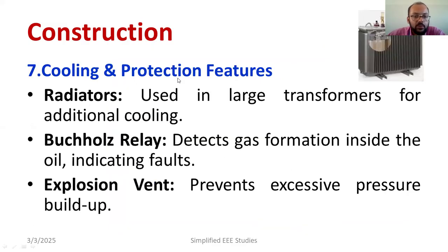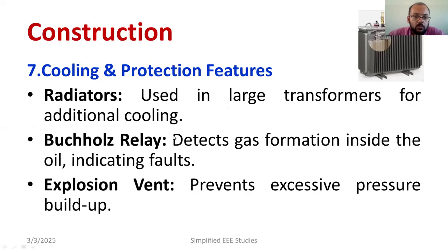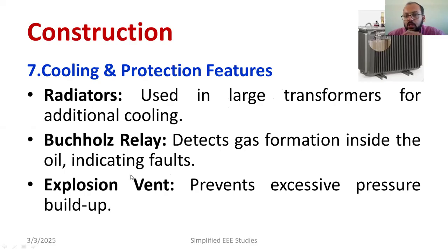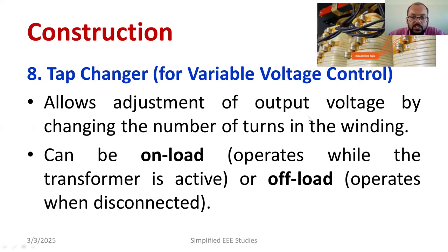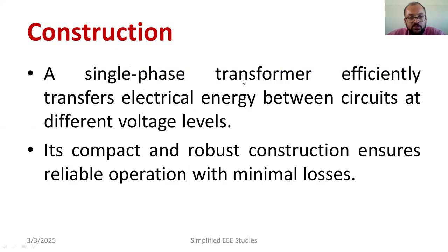Other components include cooling and protection features. We have radiators and fins — a mechanical construction mainly for additional cooling in large transformers. There will also be a Buchholz relay, which is a gas-operated relay that provides protection based on the mercury level. Similarly, we have an expansion vent that prevents excessive pressure buildup, and a tap changer to adjust the output voltage by changing the number of turns — both on-load and off-load tap changers are available.